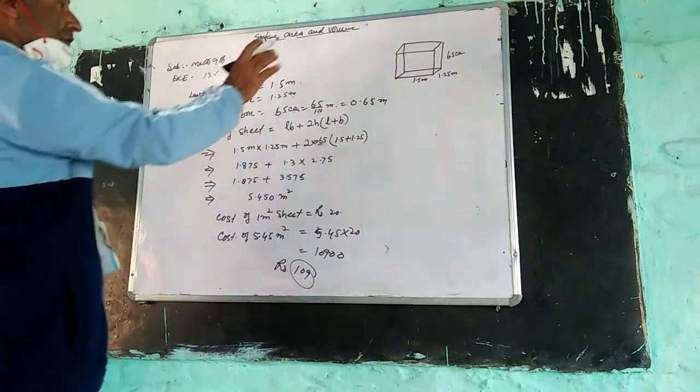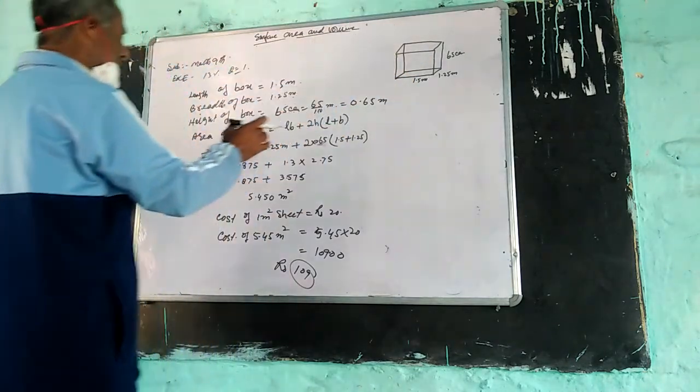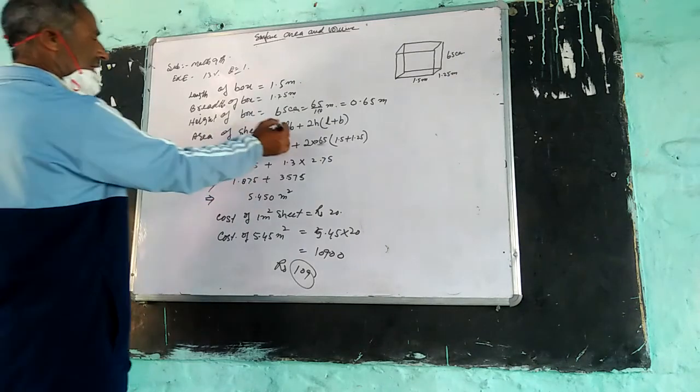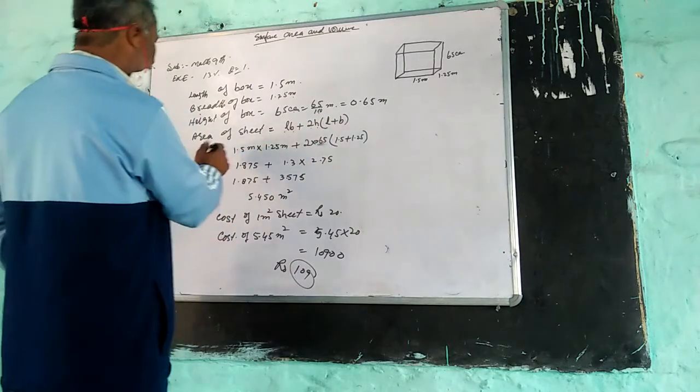For area of the sheet: bottom, we have the four sides, top is open—it is open at the top. So area A, area of the sheet required is LB plus twice height times L plus B.